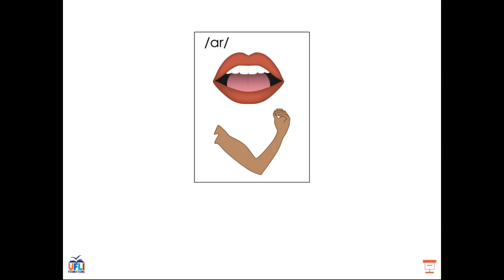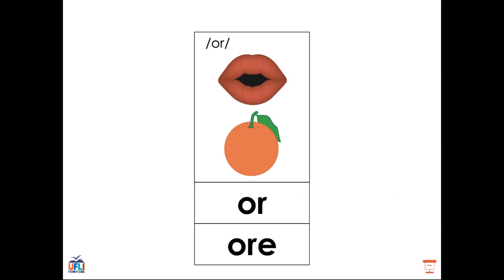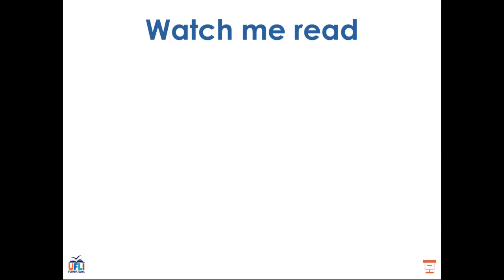So we learned about the R sound, AR, arm, R, and the OR sound, OR, ORE, orange, OR. Now we're going to look at some words together. This is the word start. We see the AR spelling pattern. So we would sound it out like this: start, start.